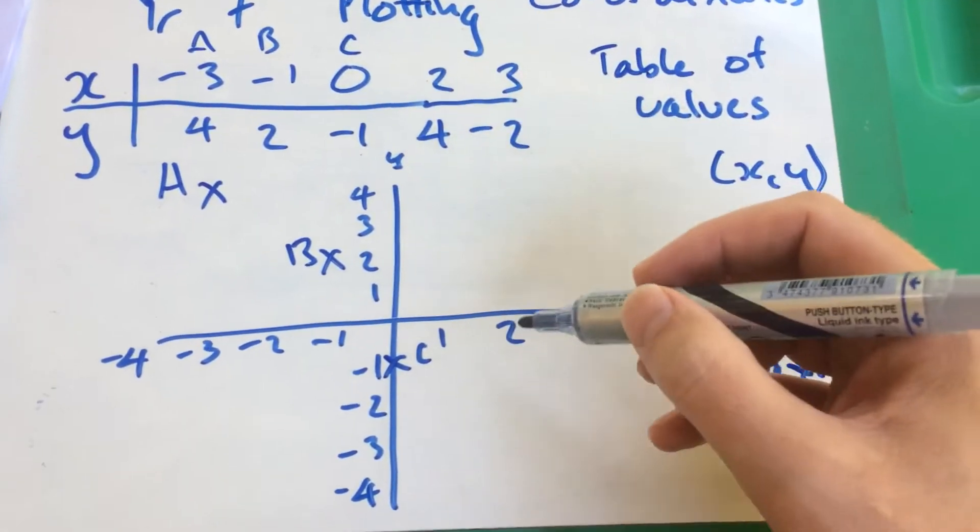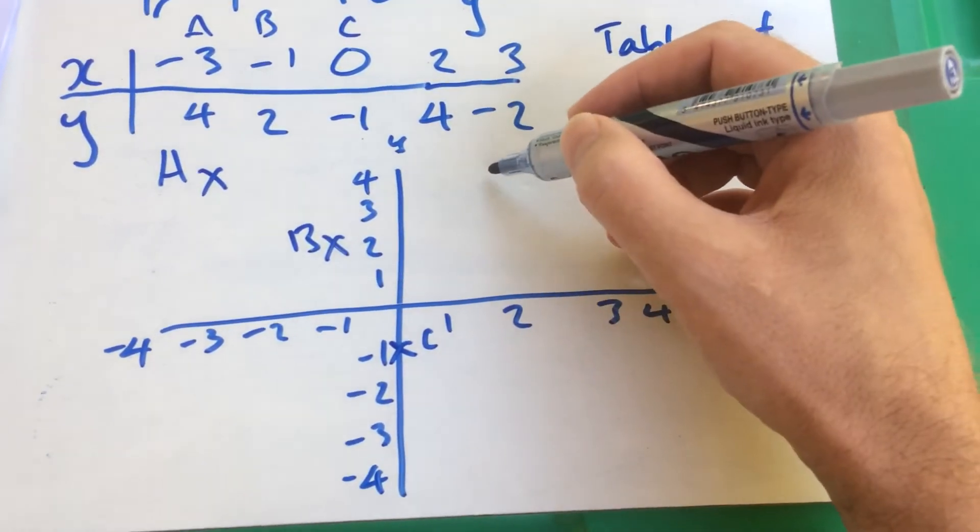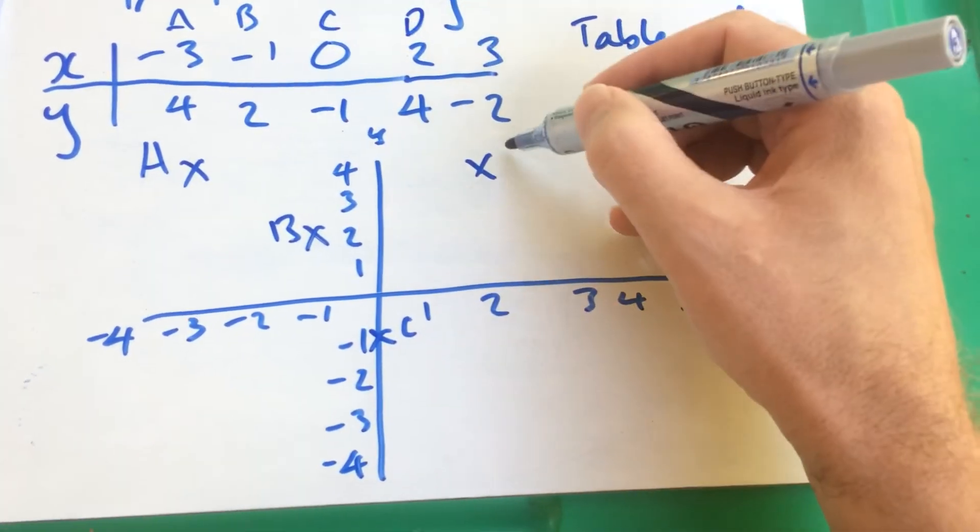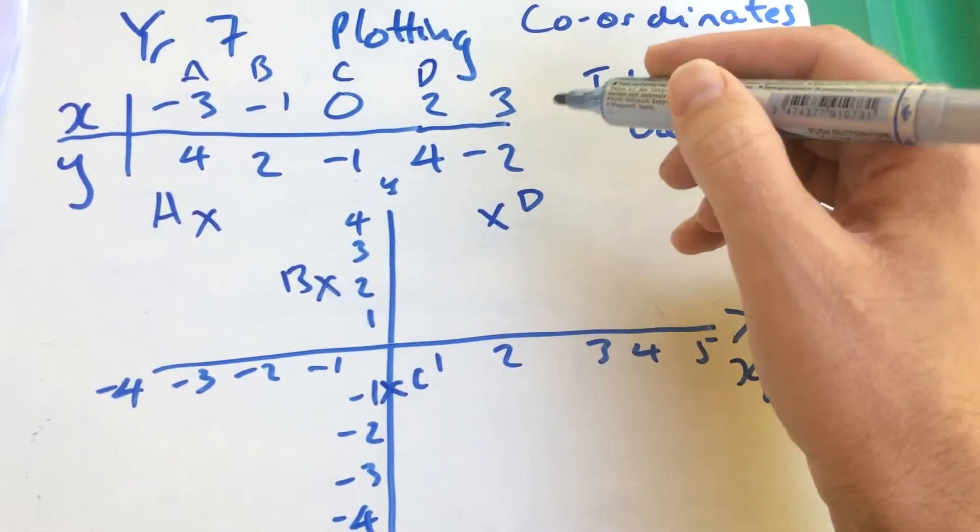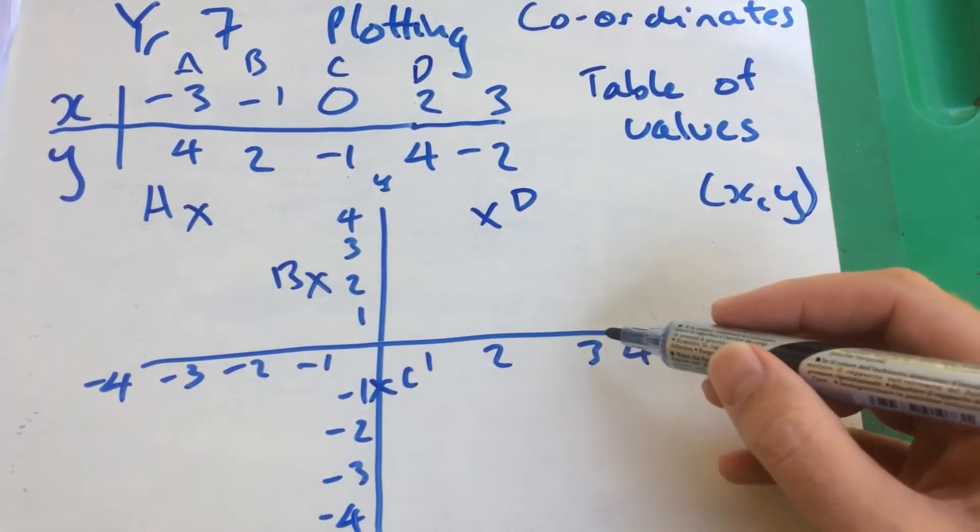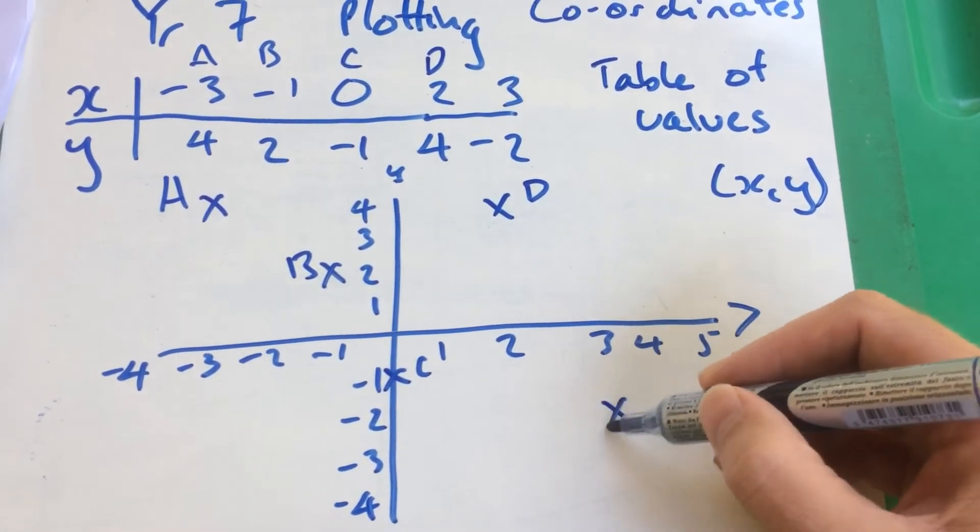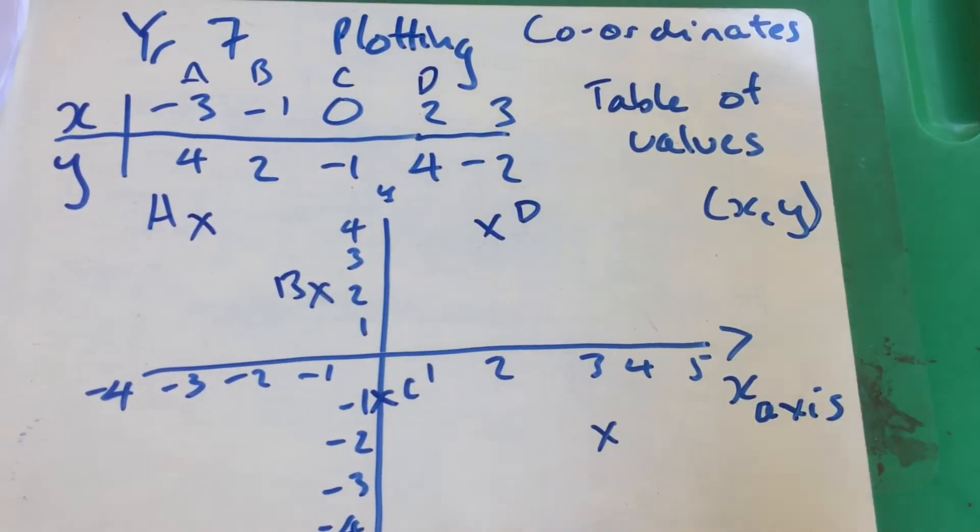Then say 2 and 4. 2 and 4, that would be point D. And then minus, sorry, 3 and minus 2. 3 and minus 2. OK. So there we go.